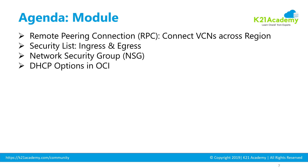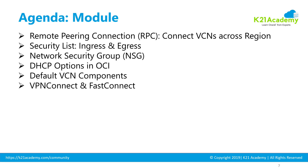Then we look at DHCP options, where DHCP stands for Dynamic Host Configuration Protocol. When a machine starts inside a subnet, how does it pick up different configurations? We'll cover that. Then we look at default VCN components — when a VCN is created, what default components are automatically created as part of that VCN.